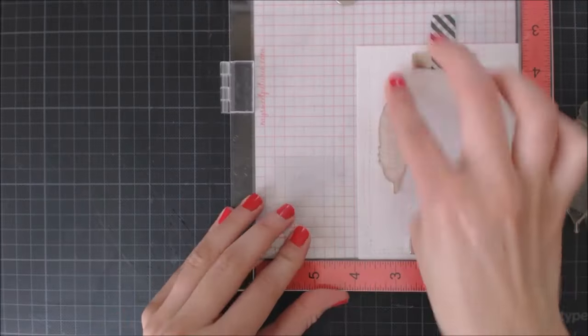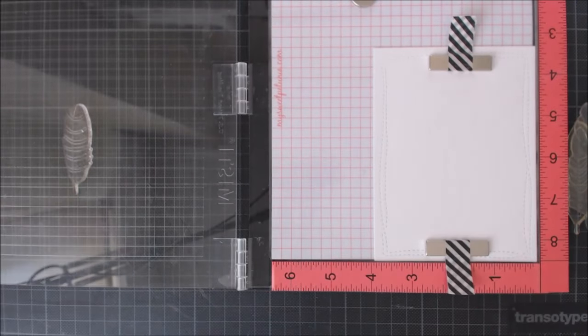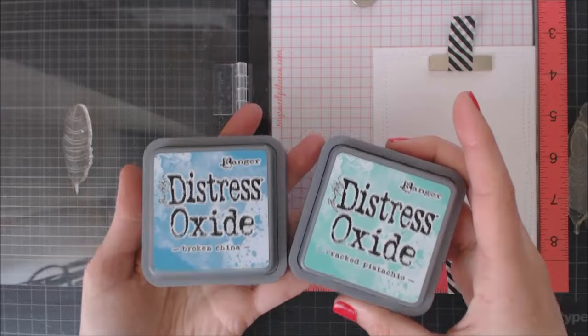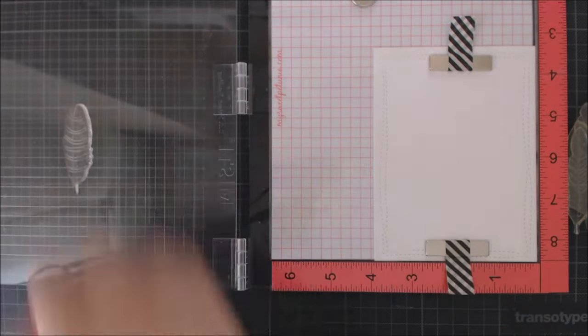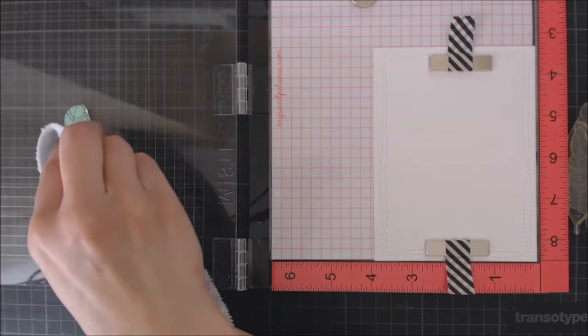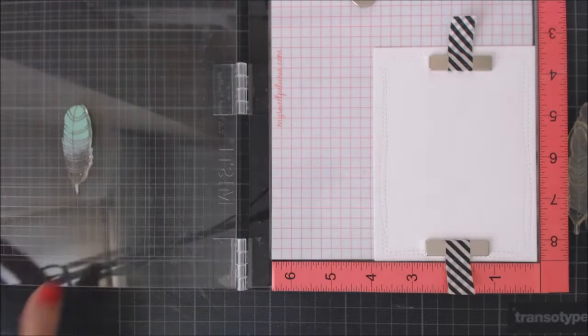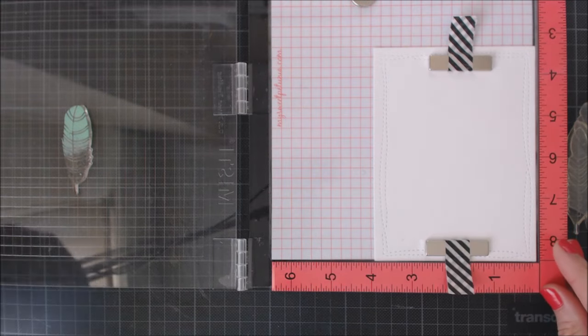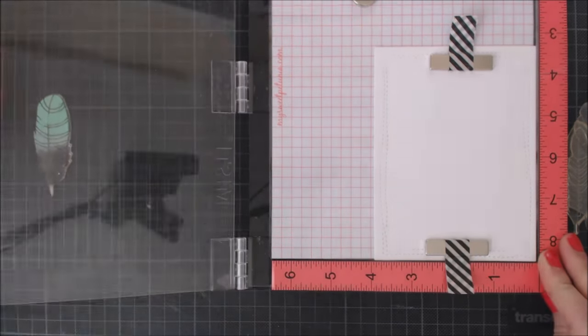I'm going to start with the smallest feather combining Broken China and Cracked Pistachio Distress Oxide inks to create an ombre effect. I'm starting with Cracked Pistachio first, inking the top of the feather only and before I stamp it I'm going to smooth the ink out in the middle using a dry cloth.